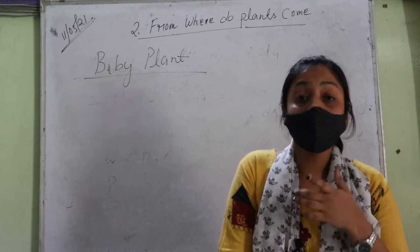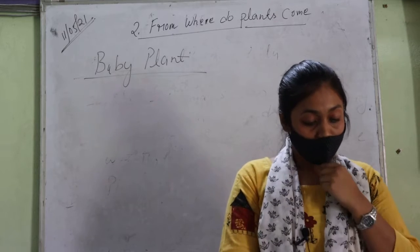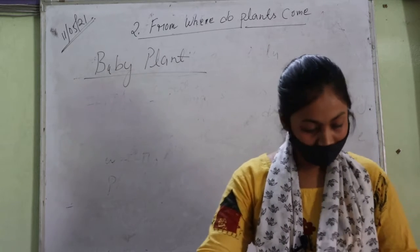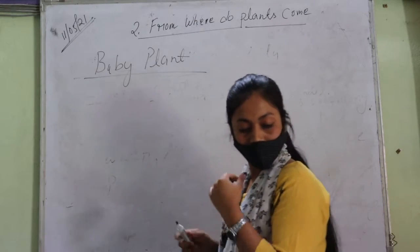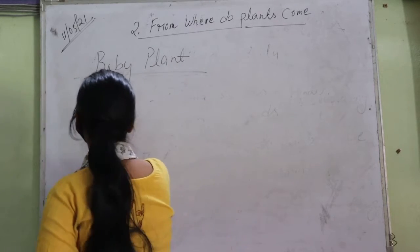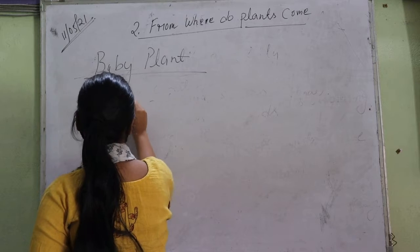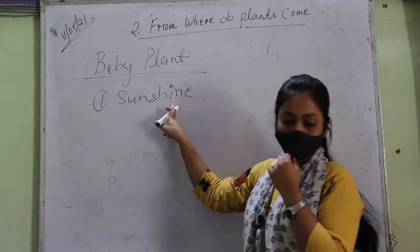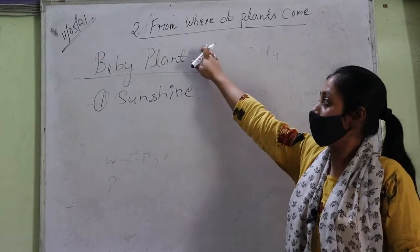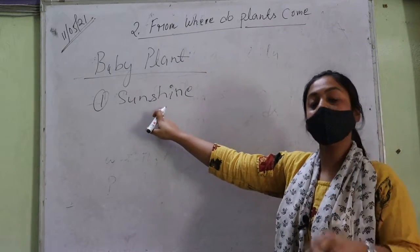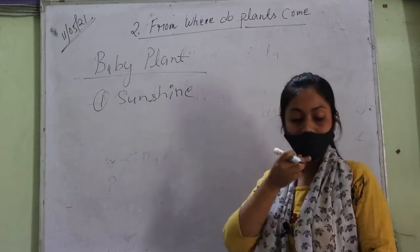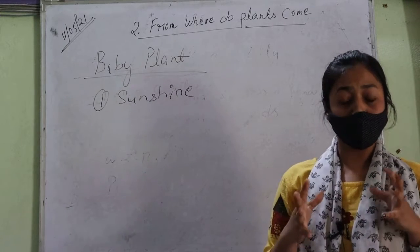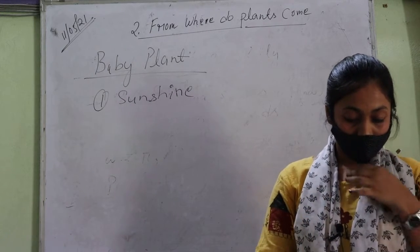What does a seed need to grow into a big plant or a baby plant? First is sunshine. In order to grow the seed into a baby plant, it needs sunshine. Baby plant ko grow karne ke liye pehle dhoop chahiye. The sunshine keeps it warm.